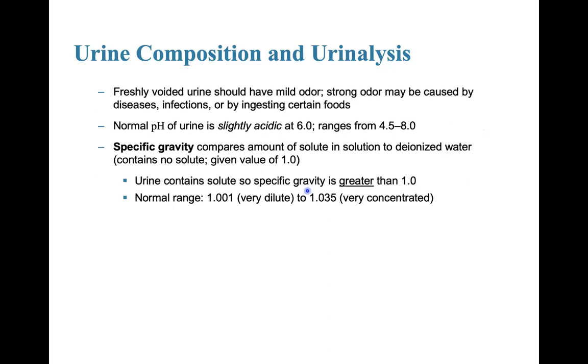Specific gravity compares the amount of solutes in solution to that of deionized water. Urine contains solutes, so specific gravity is greater than one. Normal range is anywhere from 1.001, which is very dilute, to 1.035, which is very concentrated.